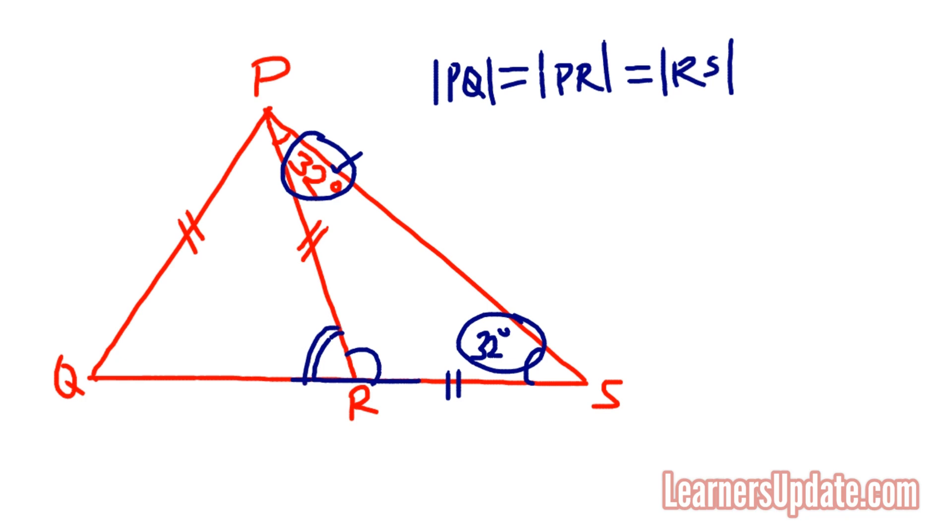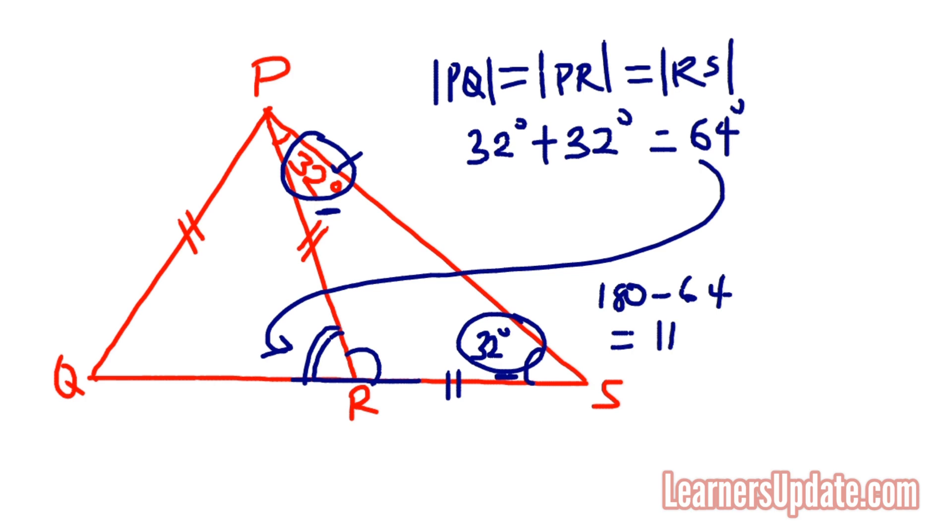So we can decide to say 32 degrees plus 32 degrees, which is 64, and that's going to give me the value of this guy here. Or I can decide to say 32 plus 32 equals 64, then sum of angles in a triangle is 180, so 180 minus 64 which would give me 116.